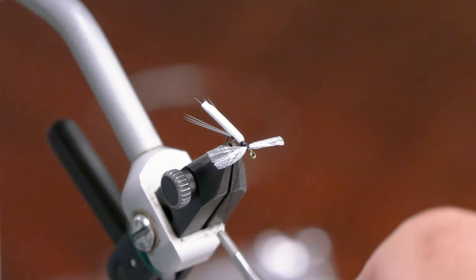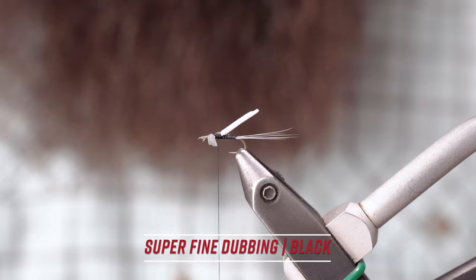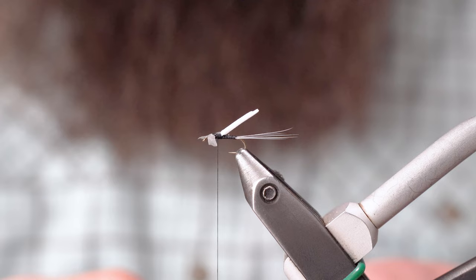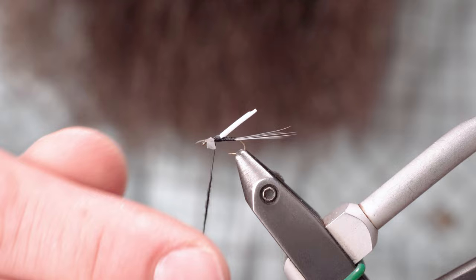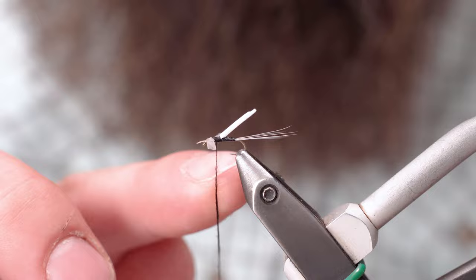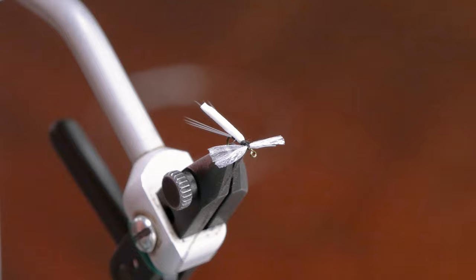Next is some superfine dubbing. I'm taking just a tiny little bit of dubbing here. Not much at all. You're really just wanting to coat that thread just a tiny bit. Don't want to bulk this up much at all.